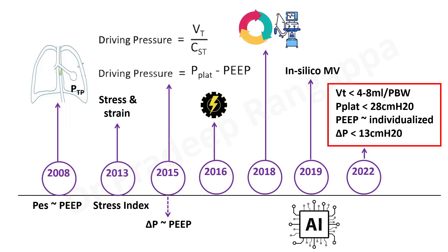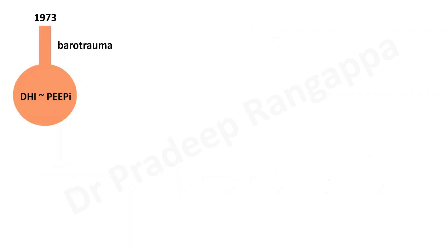In 2022, the current norms for safe ventilation are: tidal volume 4–8 ml/kg predicted body weight, P-plat less than 28, PEEP individualized based on driving pressure, and driving pressure less than 13 cmH₂O. These are the norms we subscribe to currently. This is the timeline of how ventilatory concepts have evolved over the last 20 to 30 years.